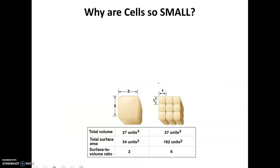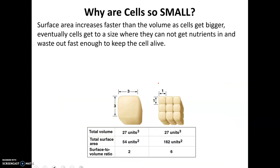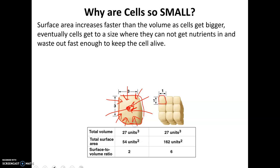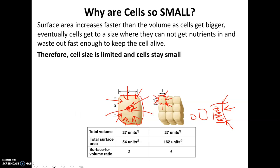Why are cells so small? As cells get bigger, the surface area increases faster than the volume. The surface area is the exposed surface — if something needs to get to the middle of a cell, it can only enter where there's exposed membrane, so it has to travel a far distance. But if you took the same volume and split it into a bunch of little cells, all that surface area means stuff can get to the middle much faster. As one single cell gets bigger and bigger, there becomes too much volume inside and not enough surface area — stuff can't get to the center fast enough to keep the cell alive. Therefore, cells stay small.